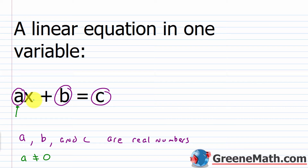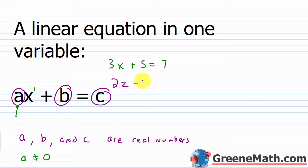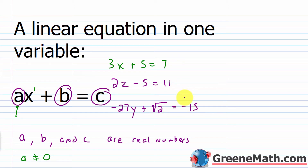Because this type of equation contains real numbers and a single variable raised to the first power, we sometimes refer to it as a first-degree equation. Some examples: 3X plus 5 equals 7 — that's a linear equation in one variable. Or something like 2Z minus 5 equals 11. Or negative 27Y plus square root of 2 equals negative 15. These are each an example of a linear equation in one variable.